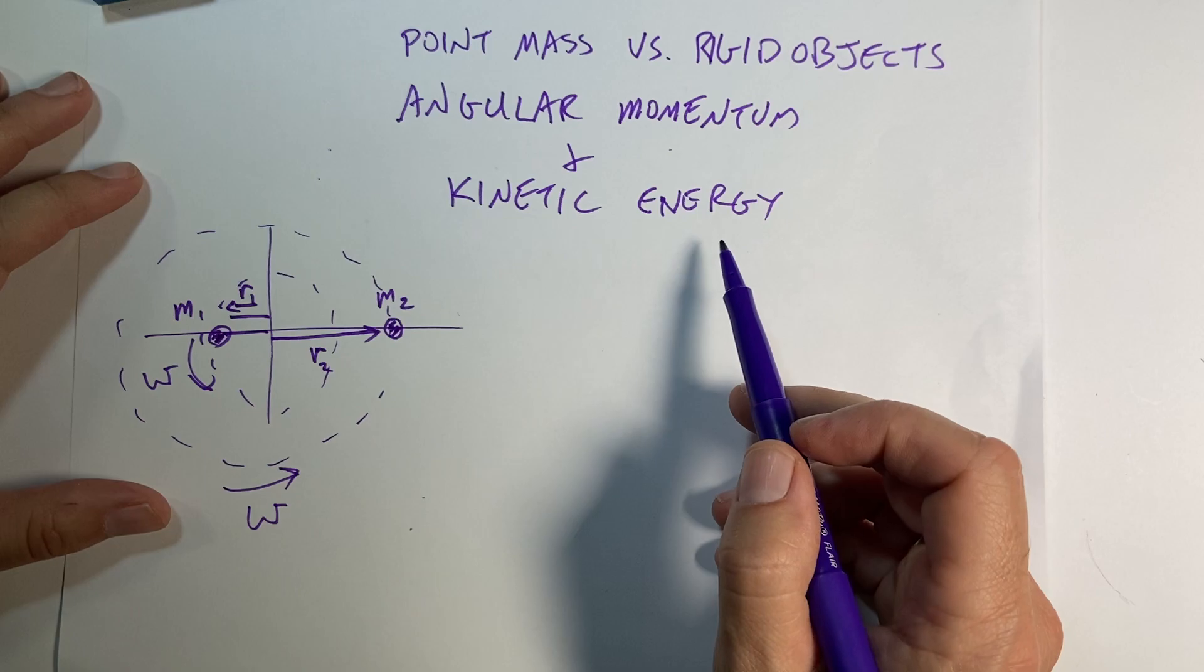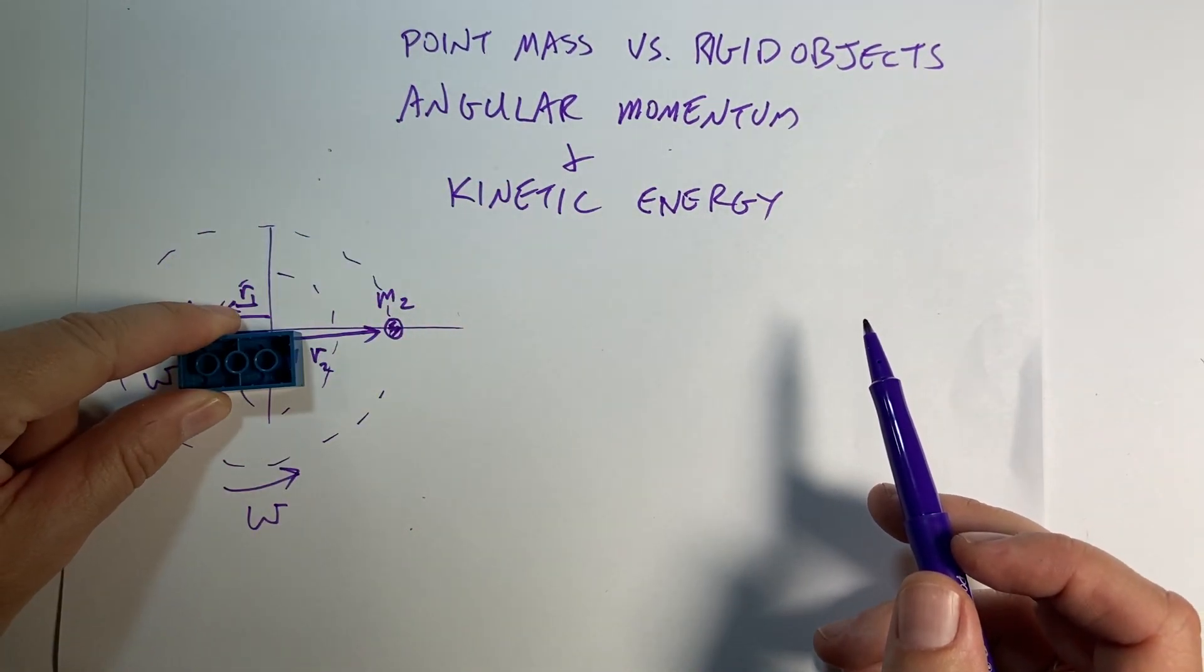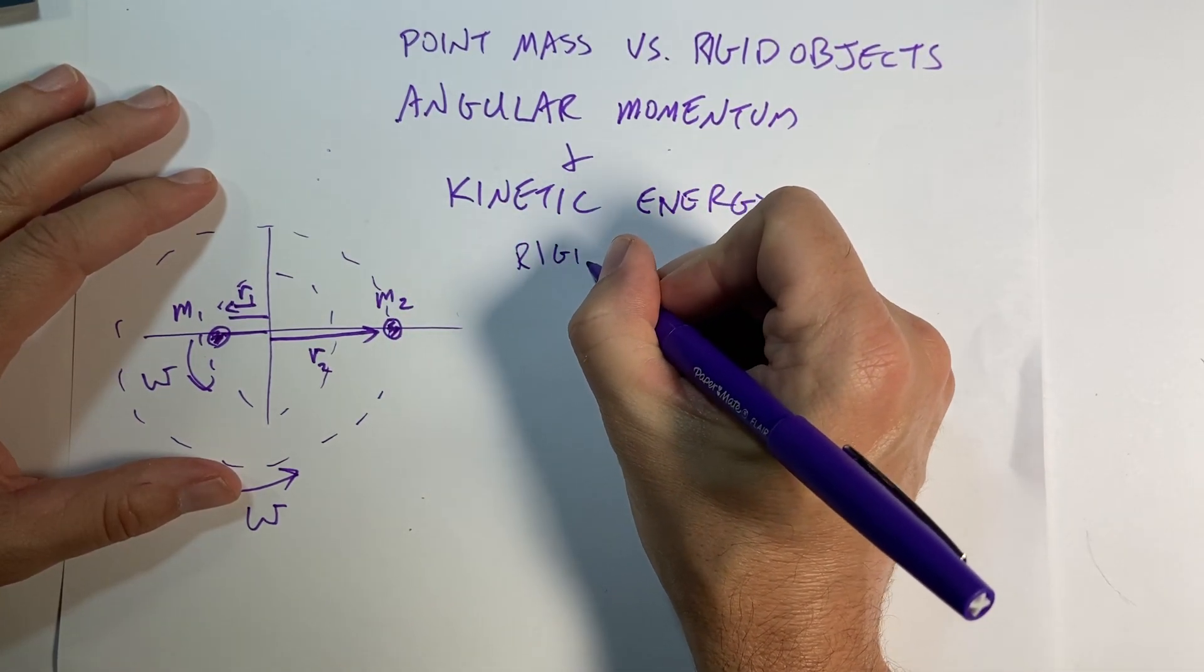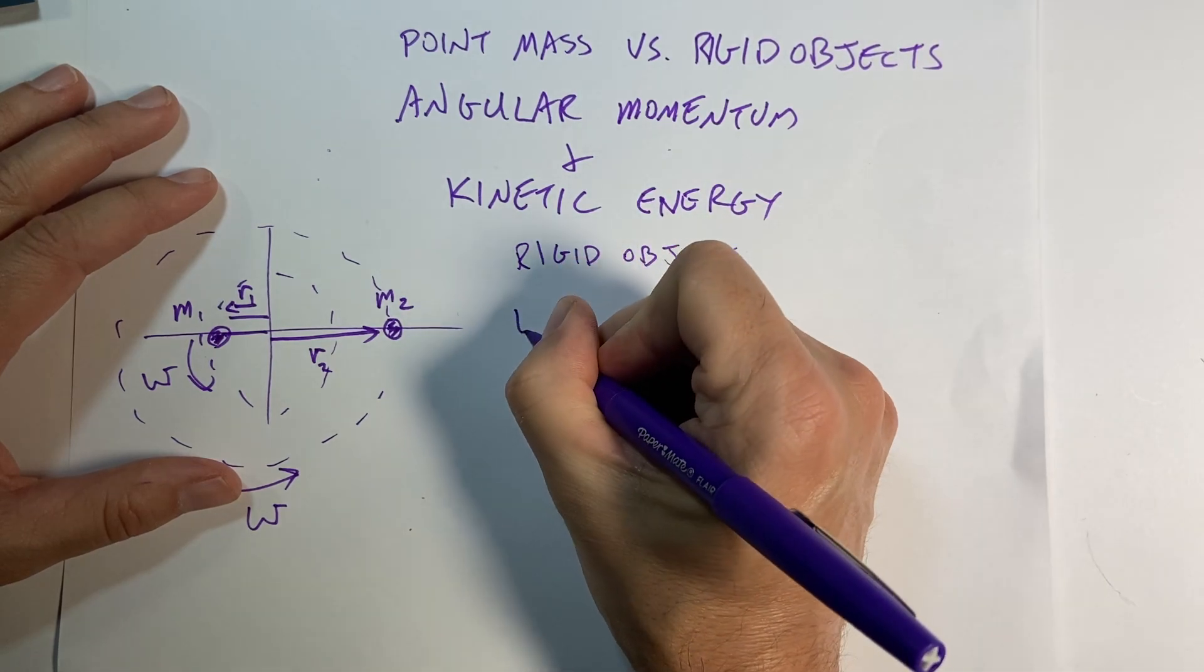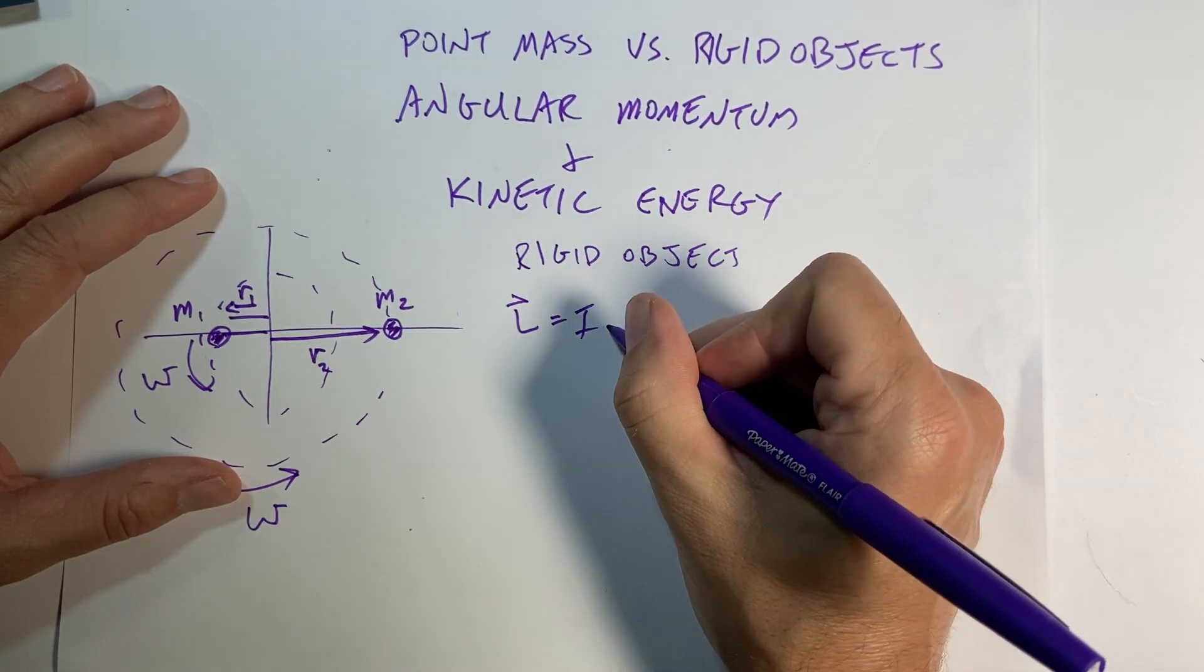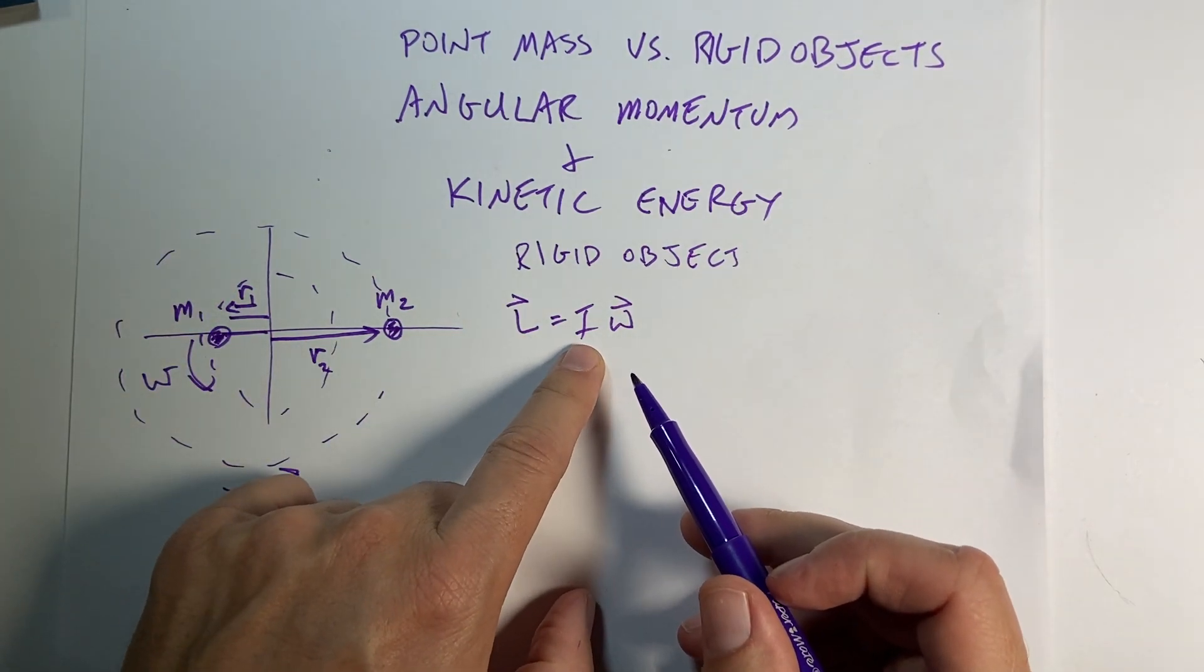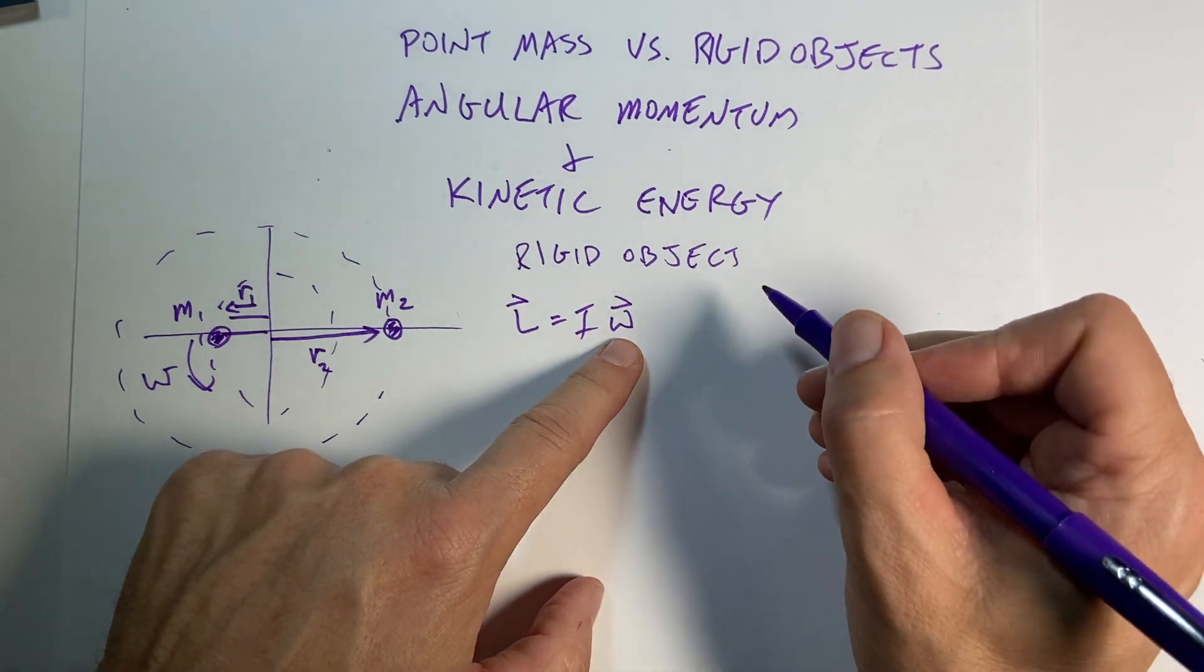There should be, we should be able to do it either way. I'm going to show you angular momentum and kinetic energy both in a rigid object form and this form. So let's do the rigid object stuff, this is what we have. For rigid object, we have the angular momentum is defined as I omega, where L is angular momentum, I is the moment of inertia, and omega is angular velocity vector.